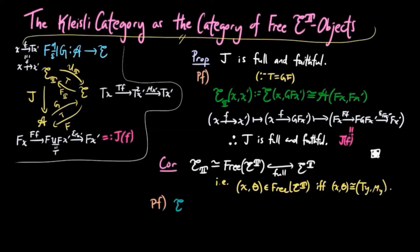By the result above, we have the comparison functor j, which is identical to the comparison functor k defined for the Eilenberg-Moore category, is full and faithful.